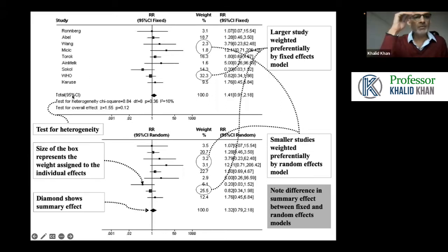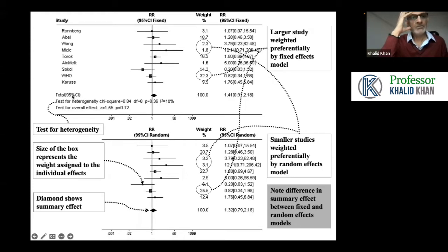Hamza, the first thing to recognize is that statistical significance has nothing to do with bias. When I say statistical significance has nothing to do with bias, I am not sure you understand what I mean. If you understand what I mean, I can proceed to answer your question. If you don't, then you need to first understand what is the difference between bias and statistical significance, and then I can go on to address your question.